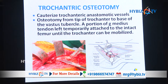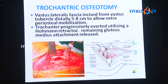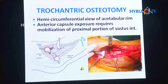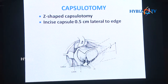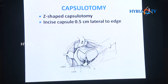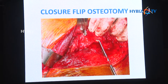A portion of the gluteus medius tendon should be left temporarily attached to the intact femur until the trochanter can be mobilized. The vastus lateralis fascia is incised at the vastus tubercle distally five to eight centimeters to allow extra-periosteal mobilization. You can then mobilize it and on a hemi-axial view see the acetabular rim and interior capsule. Dissect the gluteus minimus and the vastus muscle and perform a short Z-shaped capsulotomy — when cutting the capsule, you must be 1.5 centimeters lateral to the edge, otherwise you will damage the labrum of the hip joint. Once replaced, you can fix it with two screws.